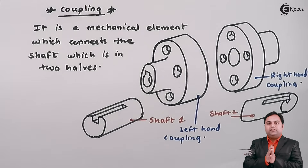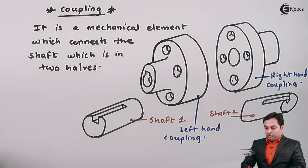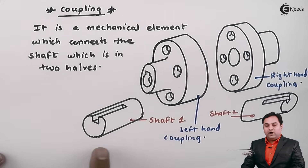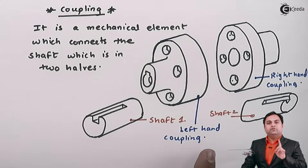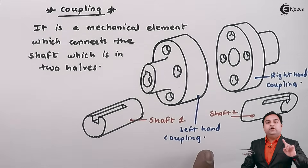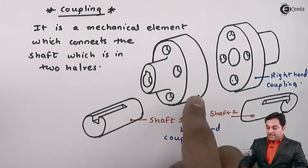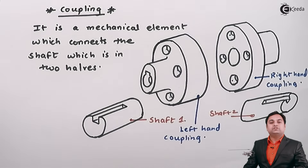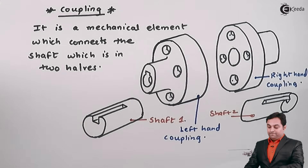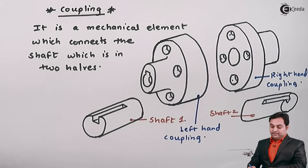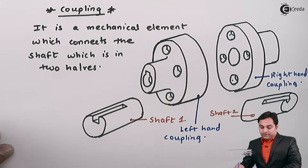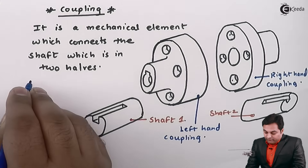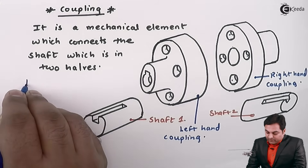Now if we give power to any one of the shafts, it would rotate the other shaft and the motion would be transmitted through this coupling. So now we look at the functions of coupling.